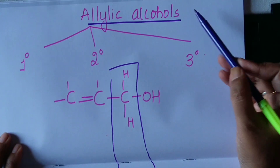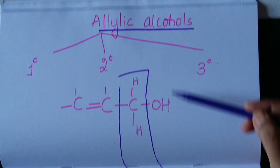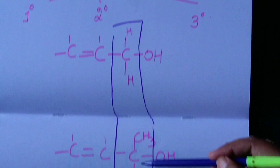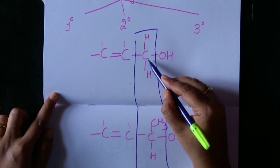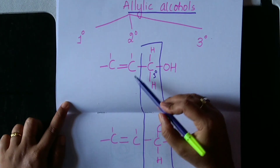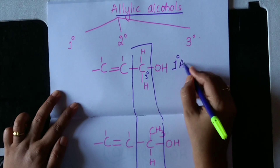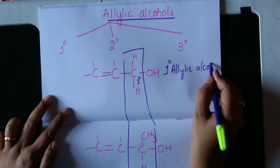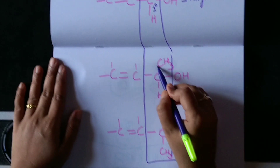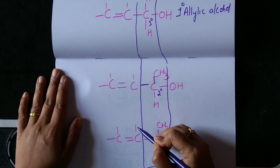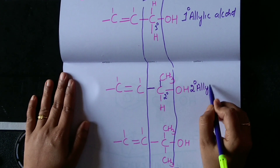Like alkyl alcohols, allylic alcohols can also be of three types: primary, secondary, and tertiary. In all three cases, the OH group is attached to an SP3 carbon atom. In the first case, the carbon atom is primary because it is attached to only one carbon atom directly. Therefore, this molecule is a primary allylic alcohol. In the second case, the carbon atom is attached to two carbon atoms directly, so it is secondary — a secondary allylic alcohol.